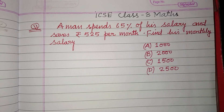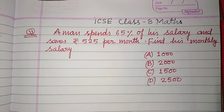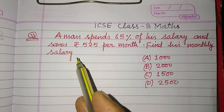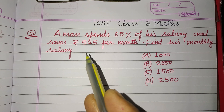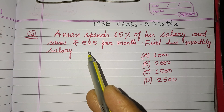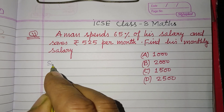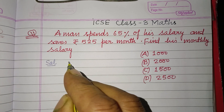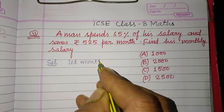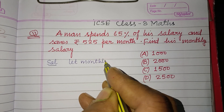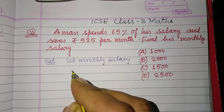Hello viewers, warm welcome to this YouTube channel. This is a question from ICSC Class 8 Math: a man spent 65% of his salary and saved rupees 525 per month. Find his monthly salary. Let the monthly salary of the man be rupees X.